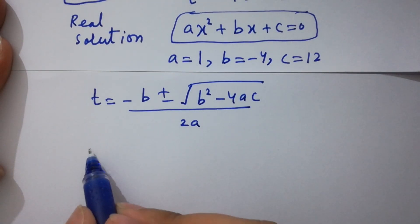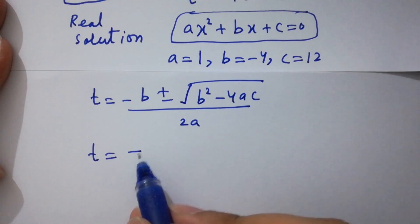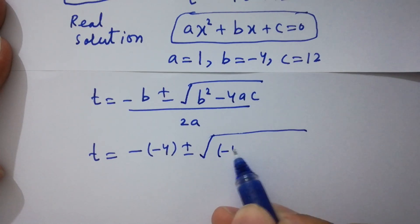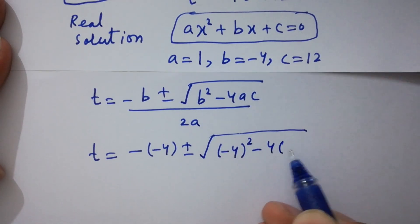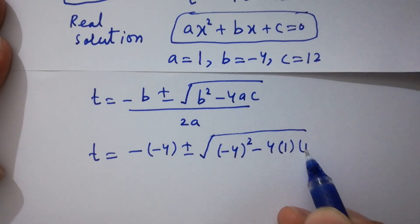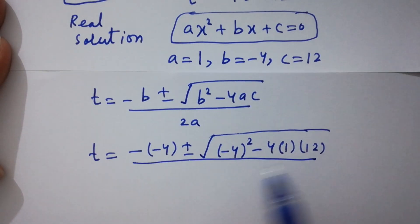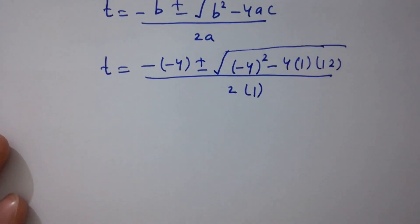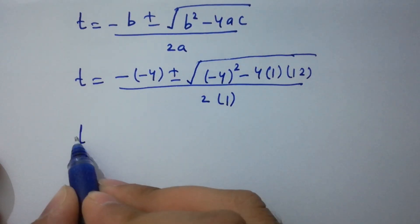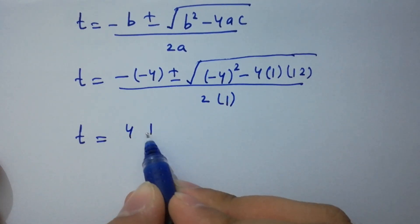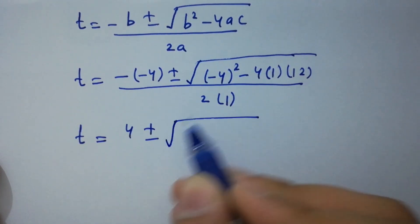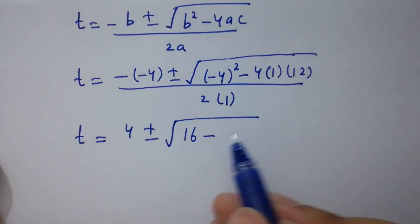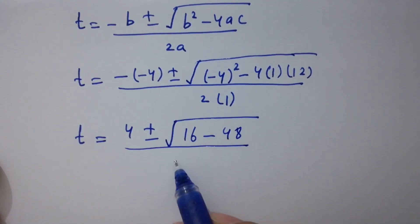Putting in the values: t equals minus of minus 4, plus or minus square root of minus 4 squared minus 4 times 1 times 12, over 2 times 1. Simplifying: t equals 4 plus or minus square root of 16 minus 48, over 2.